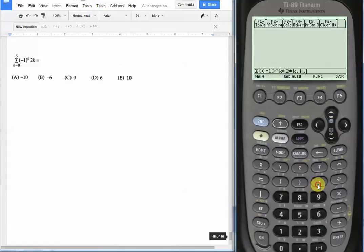And now we put another comma. And we say, where does it start and where does it end? It starts at k equals 0, ends at k equals 5. So we have 0, comma, 5.